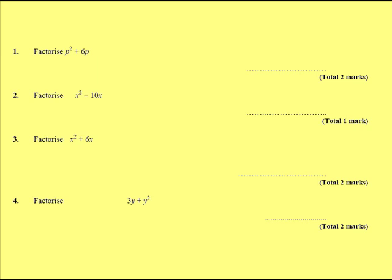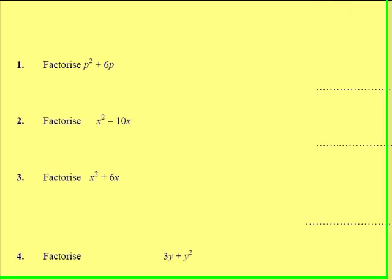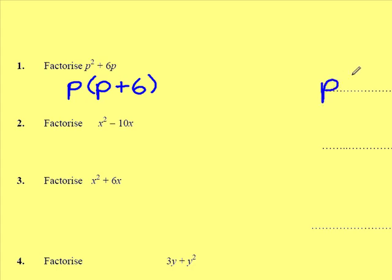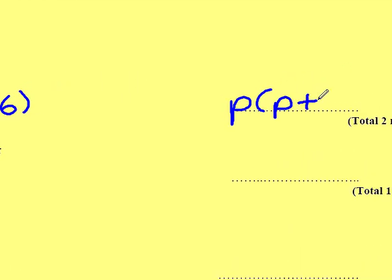Factorise p squared plus 6p. The same in both of these will be p, so we take that out. The only way we're going to get p squared is if we multiply p by p. And the way we're going to get 6p is if we multiply p by the number 6. Remember to move your answer to the dotted line because that's where the examiner will be looking for it.